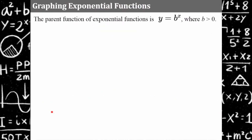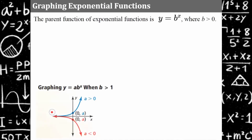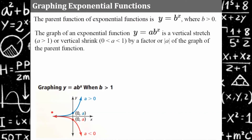The parent function of an exponential function is y equals b to the exponent x, where the base b must always be greater than zero. So in an exponential function, the base is never negative. The graph of an exponential function that's not in parent form is y equals a times b to the exponent x. What makes it exponential is that the variable x is the exponent.